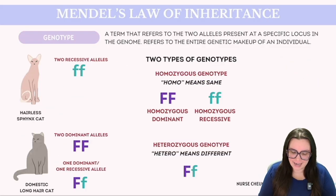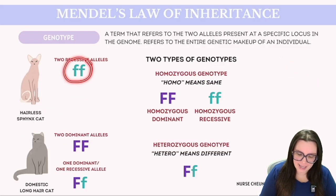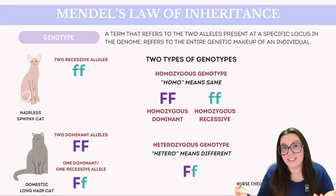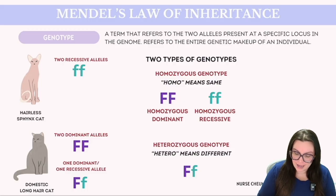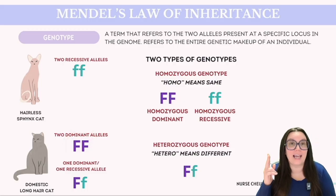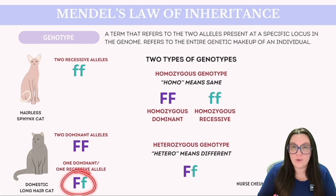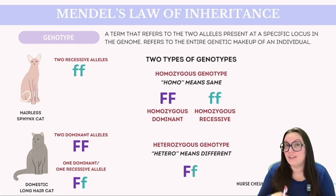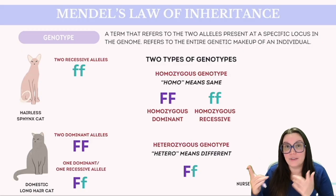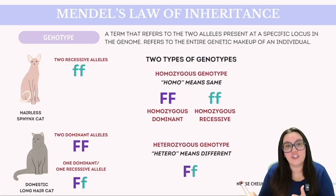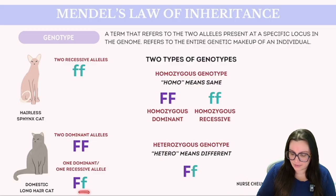If we take a look at our guide here, we can see that a sphinx cat is going to have two recessive alleles. Conversely, a long-haired cat's genotype can either be two dominant alleles — two uppercase Fs — or they can have one dominant allele and one recessive allele, one uppercase F and one lowercase f. Because of that presence of just one dominant allele, that uppercase F, it's sufficient for that furry trait to be expressed, effectively masking that recessive allele.